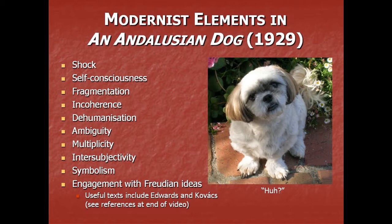The film is made up of a collection or montage of images at different times and in different places. Incoherence — I already mentioned. Dehumanisation — this is both caused by the self and wider social forces. There's a tension between internal and external influences on one's identity. Ambiguity and multiplicity, which I'll come back to. Inter-subjectivity: you may have been looking at the interplay between the writer and the reader's subjectivities in written texts, and this can also be applied to the relationship between the filmmaker and the viewer's subjectivities. Symbolism — there's an endless array to analyse with this film.